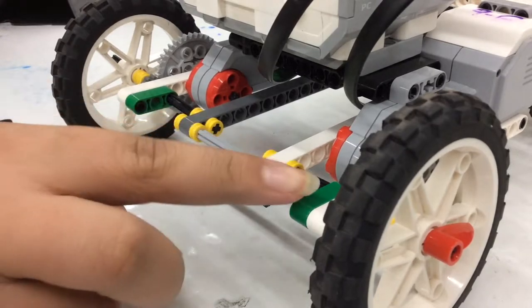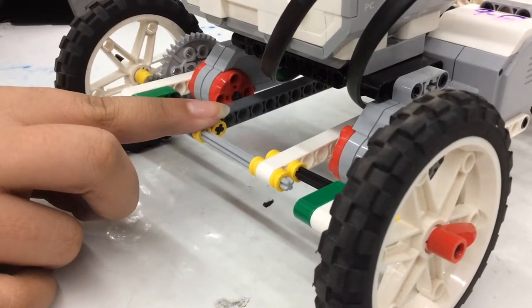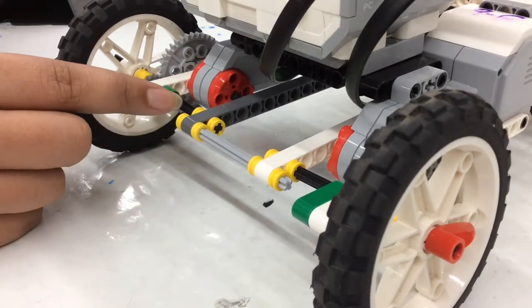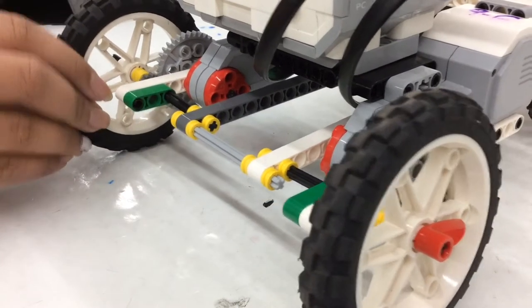So we added the green, grey, and white bars and the rods to reinforce the wheels because they were wiggling, making the drag racer go slower.